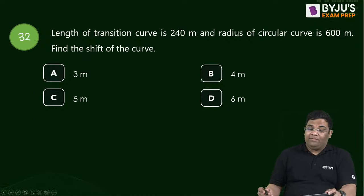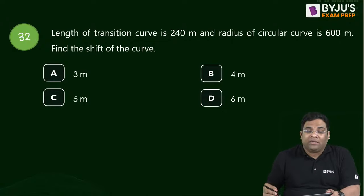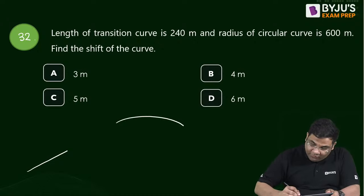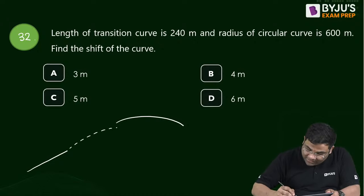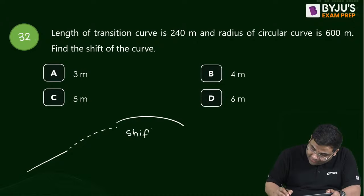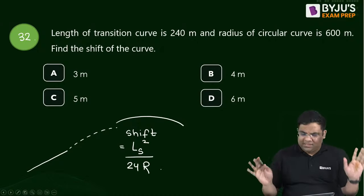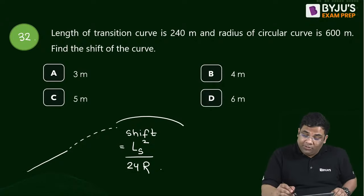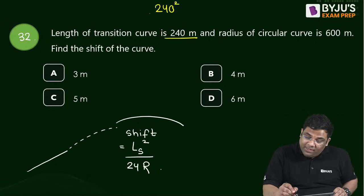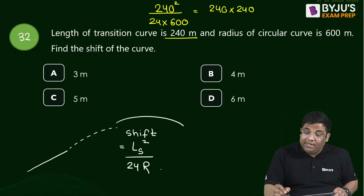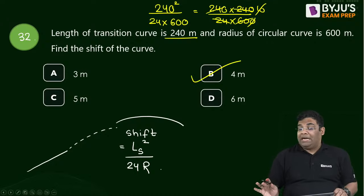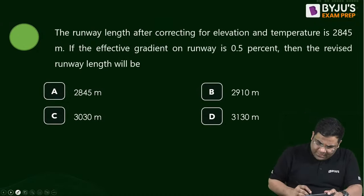Question 32: Shift of curve — transition curve combined with circular curve. Shift S = L²/(24R), where L is the transition curve length. Given L = 240 m, R = 600 m: S = 240²/(24 × 600) = 57600/14400 = 4 m. This formula applies to both railways and highways.